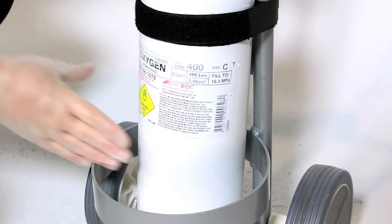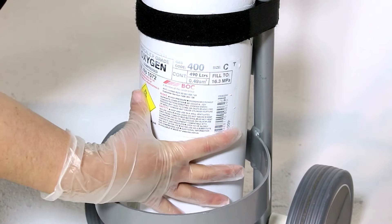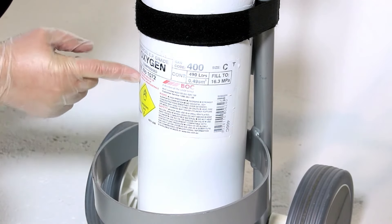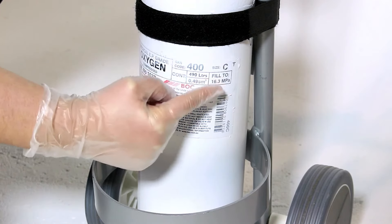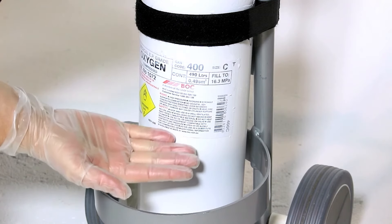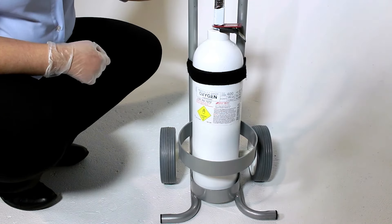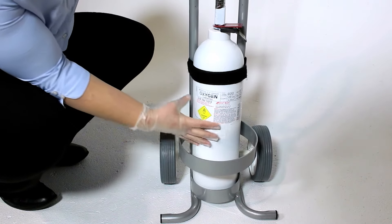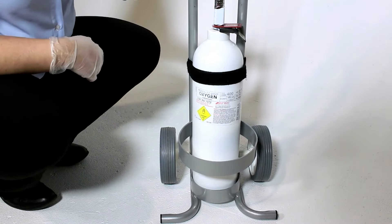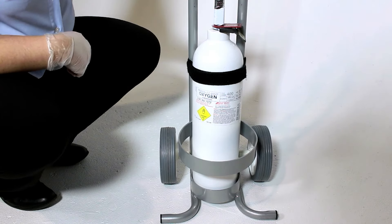Before administrating therapy, it is critical you first check the identity of the medical gas you are using. To do this, you must always check the product label, which can be found either on the shoulder or the body of the cylinder. The product label must be used as the primary means of identification. The cylinder colour scheme should be used as a secondary form of identification. Once you have established you have the correct gas, you can prepare the cylinder for therapy.